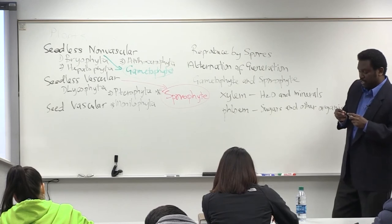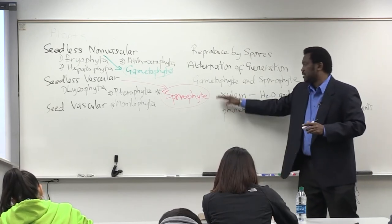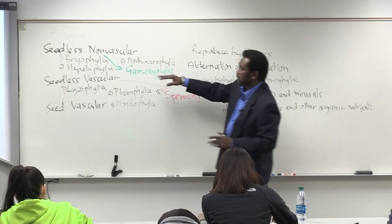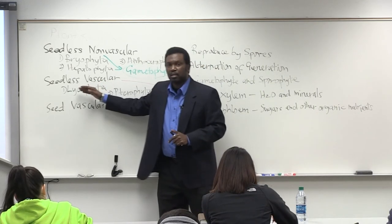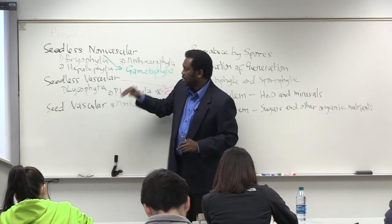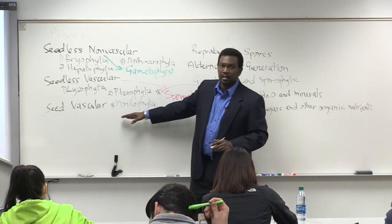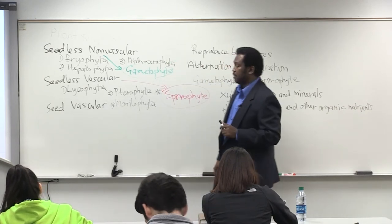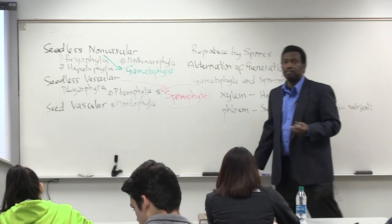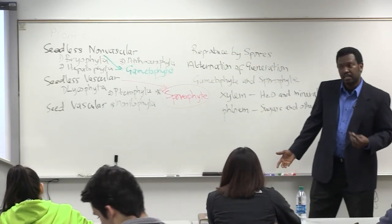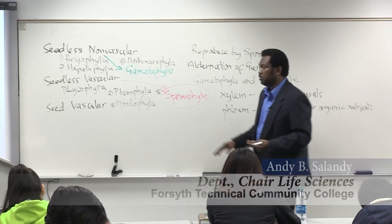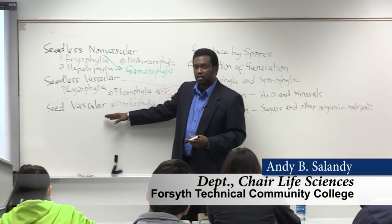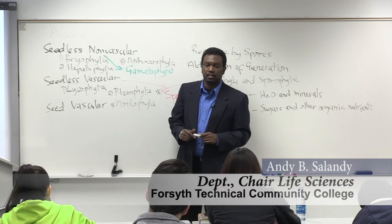This is the vascular tissue that has evolved and now shows up in the seedless vascular plants, and of course in the most advanced plants on the planet — the seed vascular plants, or seed plants. They're normally just called seed plants because the vascular tissue is understood.